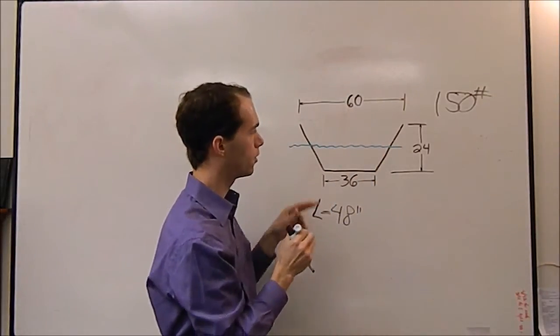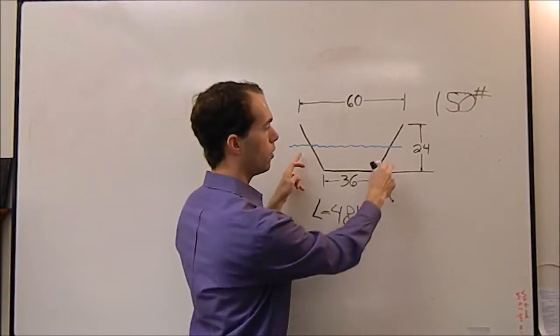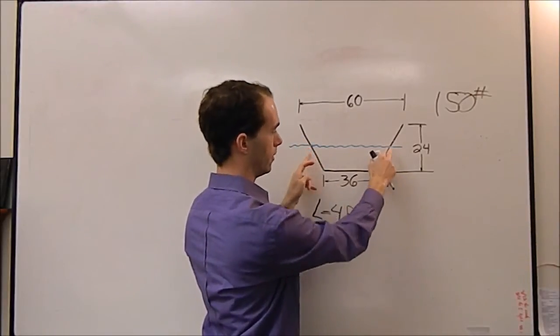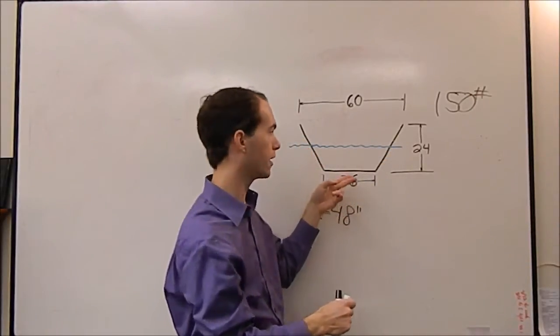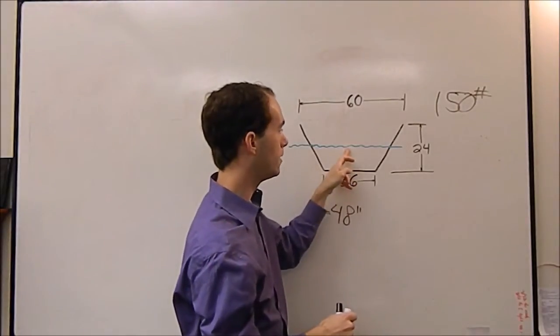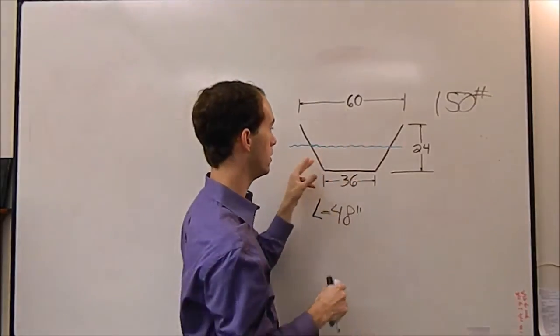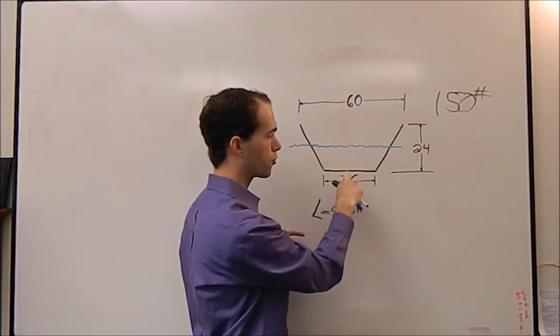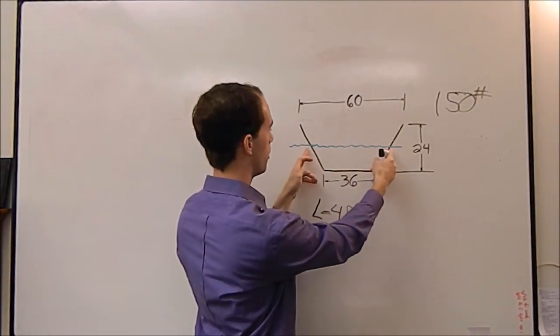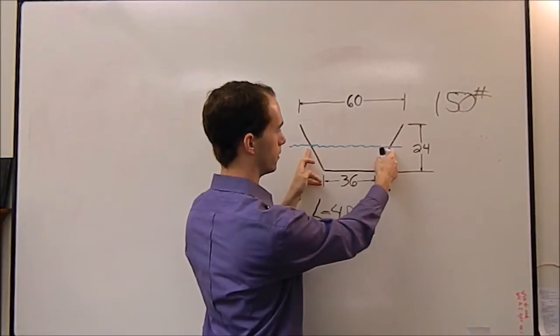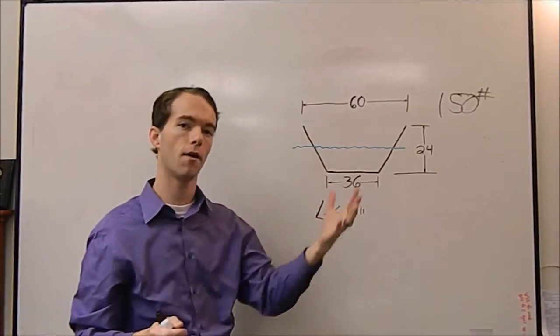The problem is we don't know what the width of this base is. We know this base. This base is 36. We don't know our height because that's dependent upon the weight, which we do know, which is good. But we can't find the area of our trapezoid because we don't know how wide this base is. So we have to kind of back things up.